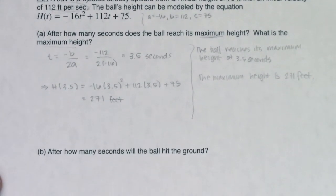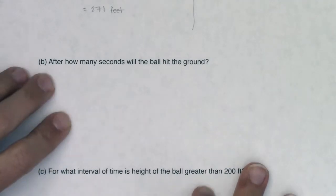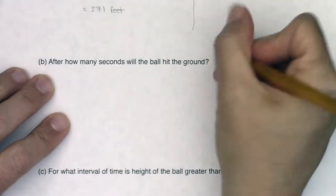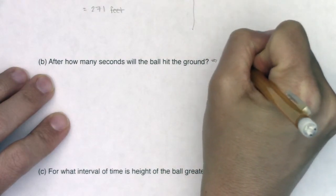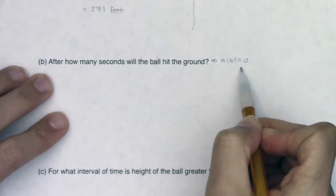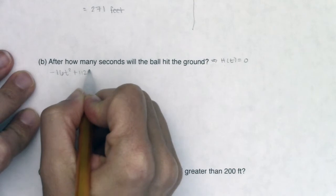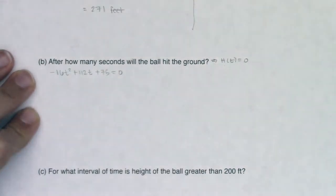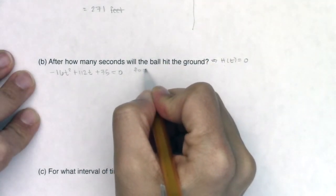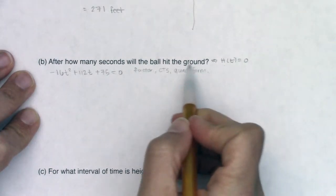Let's look at part B: after how many seconds will the ball reach the ground? If the ball is going to reach the ground, that implies h(t) equals 0, because if the ball is on the ground the height is 0. So I'm really trying to solve when negative 16t squared plus 112t plus 75 equals 0. You have three ways to solve this: factor, complete the square, or use the quadratic formula. I'm going to opt for the quadratic formula.